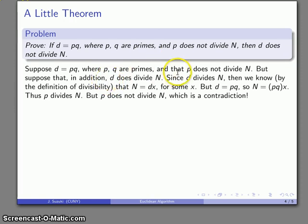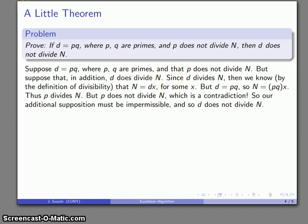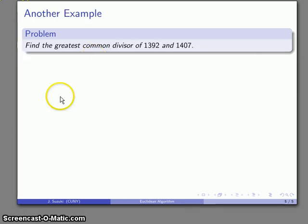However, I assume that p does not divide n. So I have a conclusion, p divides n, that contradicts something that I know to be true. And so there's my contradiction. And the only way to resolve this contradiction is that the additional assumption that we made that d does divide n must not be correct, must be impermissible. And so we must conclude that d does not divide n, which is what we wanted to prove.